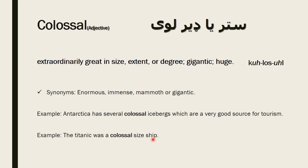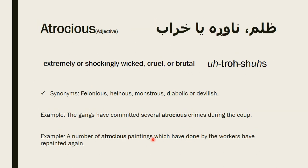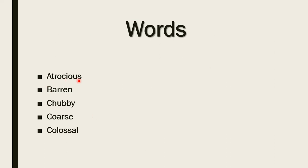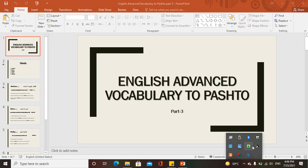Thank you once again for your attention to these words. I hope you have got some understanding of these advanced English vocabulary words. All of those words we just studied are adjectives according to functionality: atrocious, barren, chubby, coarse, and colossal. Thank you for your attention. Goodbye.